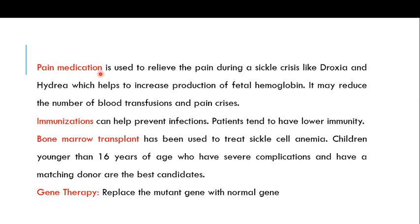Pain medication is used to relieve pain during a sickle cell crisis. The most common pain medications used are Droxia and Hydroxyurea. These medicines decrease pain and are also helpful in increasing the production of fetal hemoglobin. Fetal hemoglobin has a high affinity for oxygen, making it a better oxygen supplier. These medicines can also reduce the number of blood transfusions and pain crises.